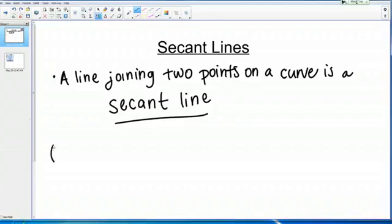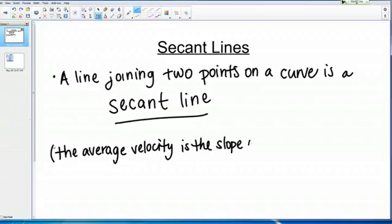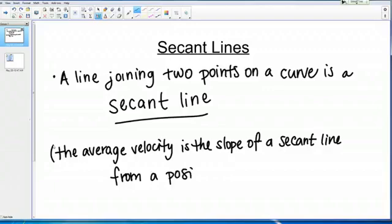To relate this back to the videos you just watched, the average velocity is the slope of a secant line from a position versus time graph. In those previous videos when Jim was calculating the average velocity, what he was really doing was calculating the slope of a secant line from the position versus time graph.